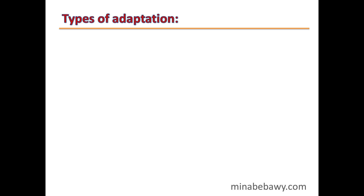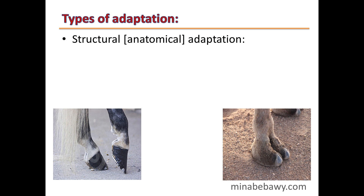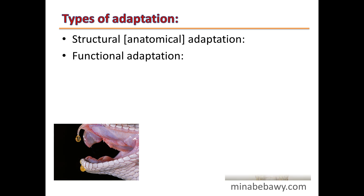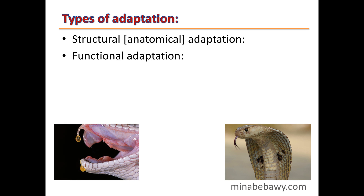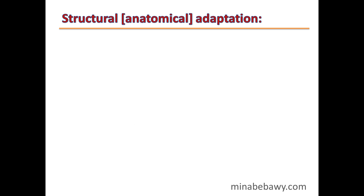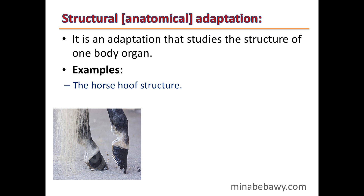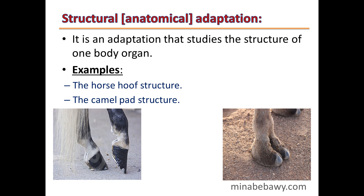Types of Adaptation: Structural or Anatomical Adaptation is an adaptation that studies the structure of one body organ. Examples include the horse hoof structure and the camel pad structure.